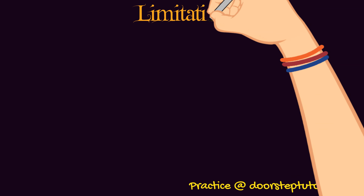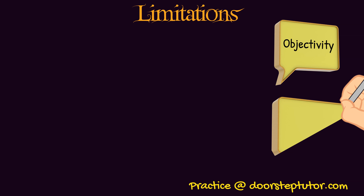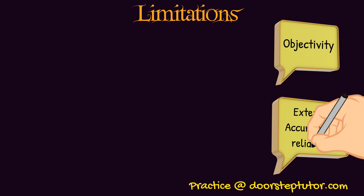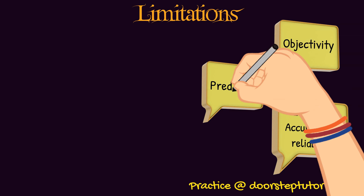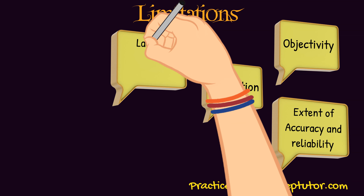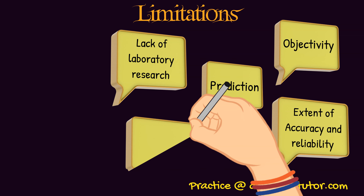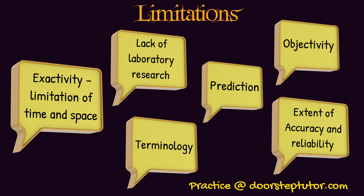Coming to the limitations — social sciences are very different from pure sciences. The limitations include: objectivity, since humans cannot be objective all the time and there is scope for subjectivity; extent of accuracy and reliability, as results are not always accurate due to many human errors involved; lack of predictability, as predictions can sometimes be wrong; lack of laboratory research, as already discussed; and certain terminological exactivity — that is, limitation of time and space. This is an important term to remember.